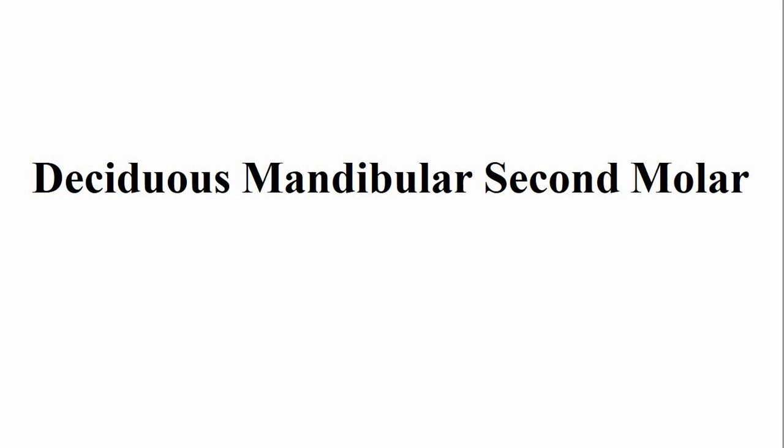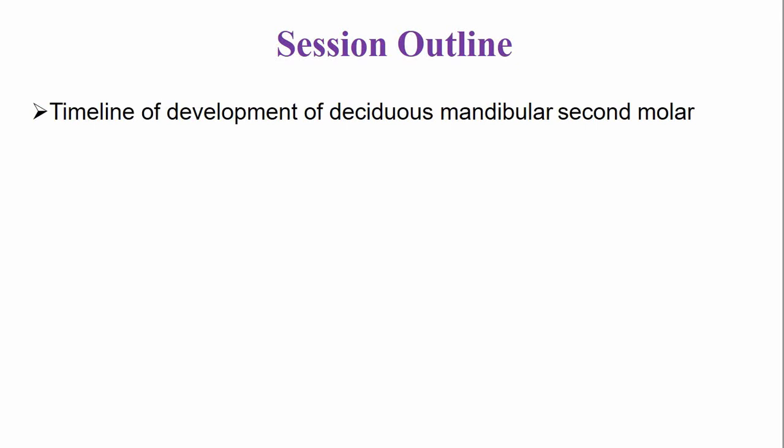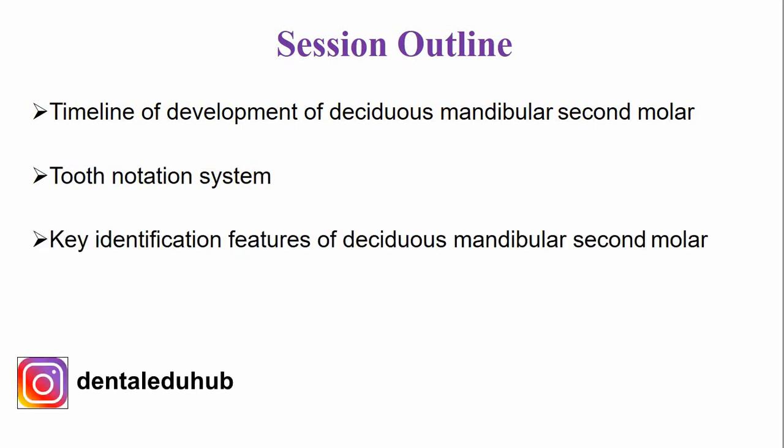Dear friends, I hope you all are doing well. Today we are going to discuss the morphology of the deciduous mandibular second molar, which is the last tooth in our deciduous tooth morphology series. We are going to discuss the timeline of development, the number of this tooth in various tooth notation systems, and the key identification features of the deciduous mandibular second molar. Watch this lecture till the end.